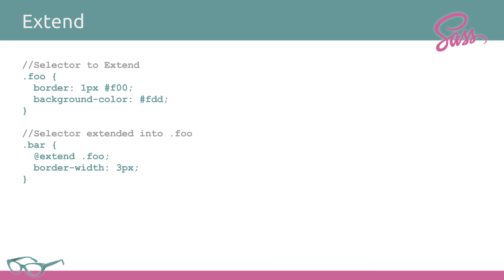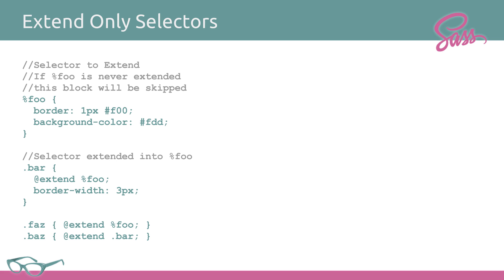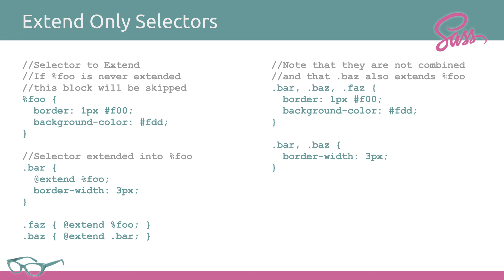The next thing you can do is extend other selectors. What extension does is take, in this case, 'bar' and add it to 'foo', so both 'foo' and 'bar' share the first ruleset, while 'bar' gets the second one. Extend-only selectors allow you to go one step further — you can create a selector that only exists if it has been extended. Instead of using a dot for the foo class, you use a percentage sign. So '%foo' will never exist in the output on its own; it only exists when extended. Bar, faz, and baz will all be picked up, and when baz extends bar, it also extends foo because bar extends foo — so it follows the chain.